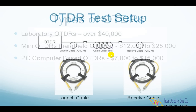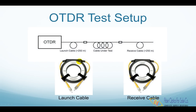Generally, OTDRs are used for testing with a launch cable and may use a receive cable. The launch cable allows the OTDR to settle down after the test pulse is sent into the fiber and provides a reference connector for the first connector on the cable to determine its loss. A receive cable may be used on the far end to allow measurements of the connector at the end of the cable.